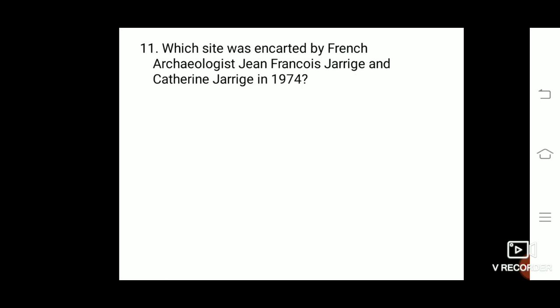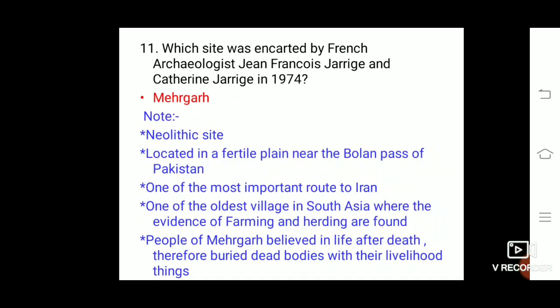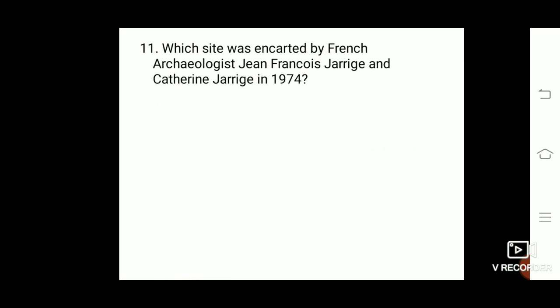Which site was excavated by French archaeologists Jean-François Jarrige and Catherine Jarrige in 1974? That site is Mehrgarh. Mehrgarh is a Neolithic site located in a fertile plain near the Bolan Pass of Pakistan, one of the most important routes to Iran, and one of the oldest villages in South Asia where evidence of farming and herding are found. The people of Mehrgarh believed in life after death, therefore they buried dead bodies with their livelihood.